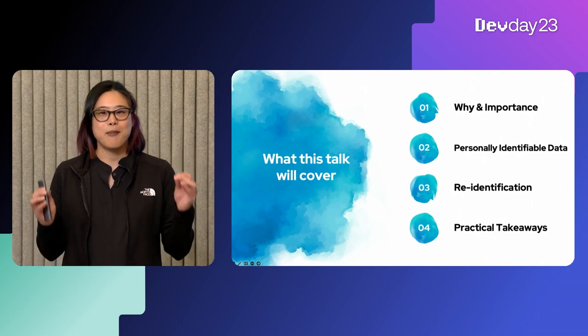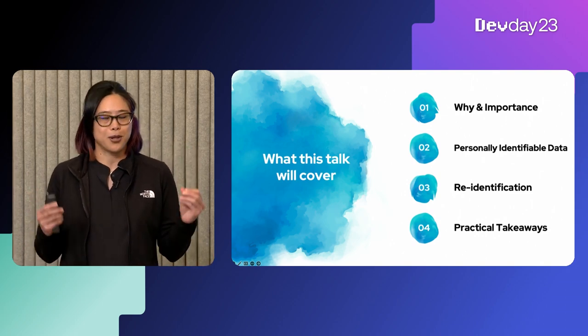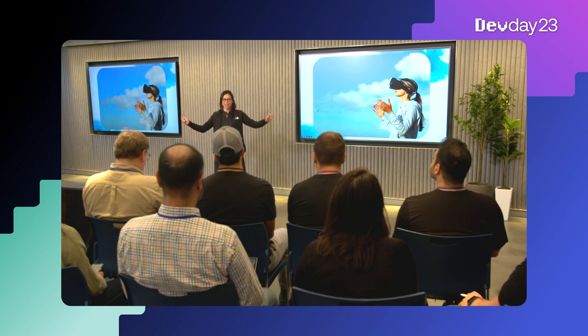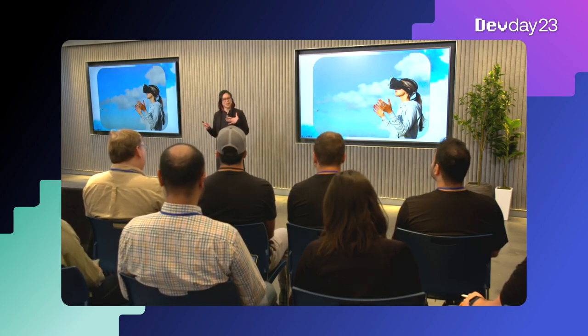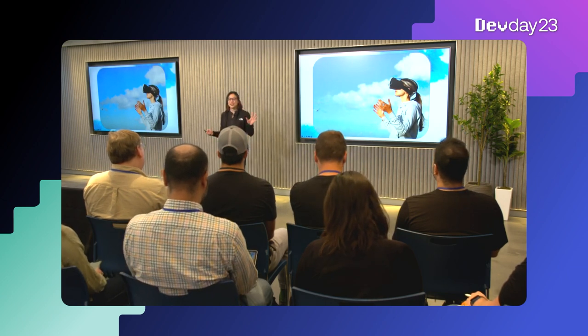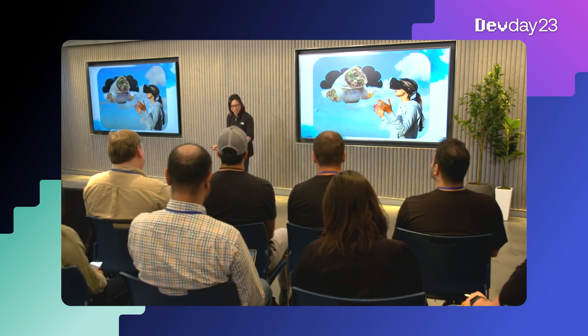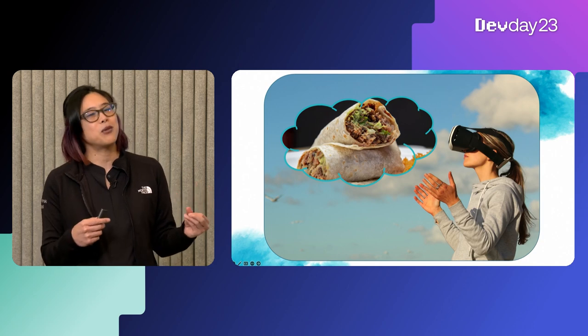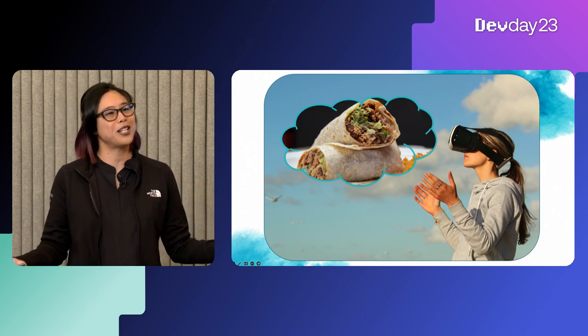To demonstrate the power of personally identifiable information, we're going to play an imagination game. This one is going to be for all the burrito lovers out there. I'm from San Francisco, so it's burritos there. I'm here to talk about Burrito Match. This app is the hottest thing in burrito recommendation engines. With a few things about yourself, it will recommend you your perfect burrito.